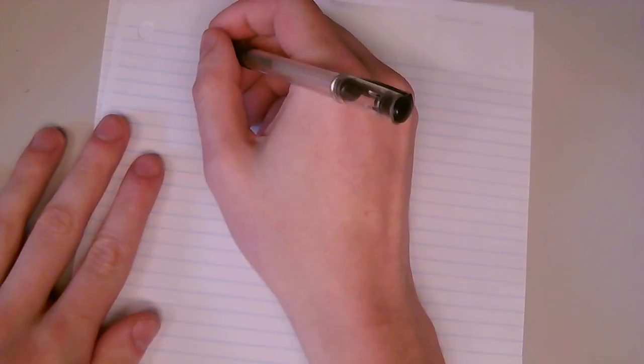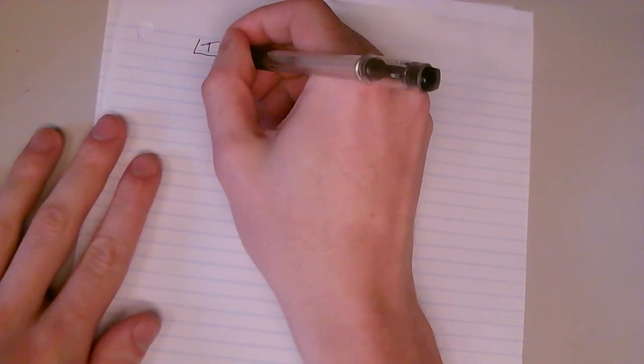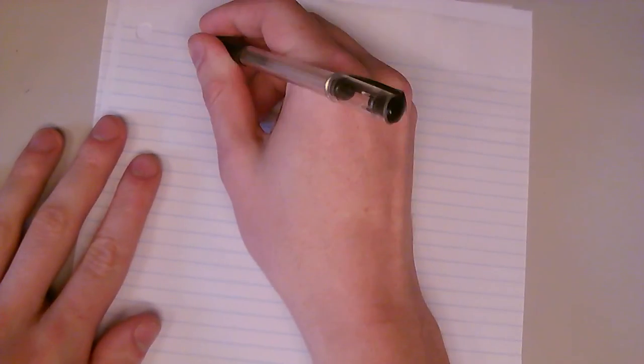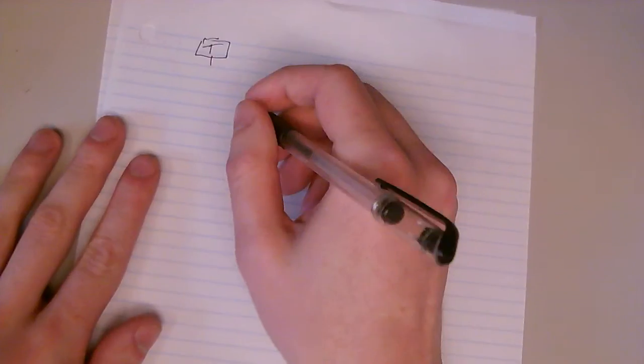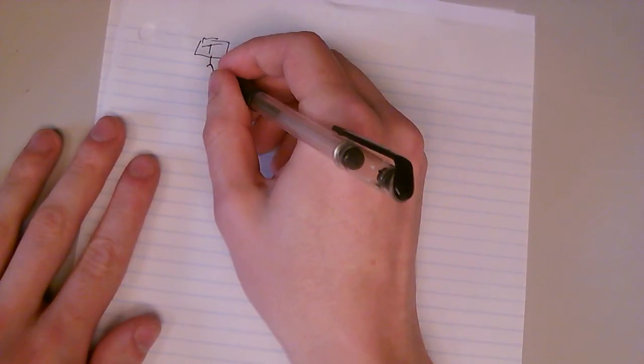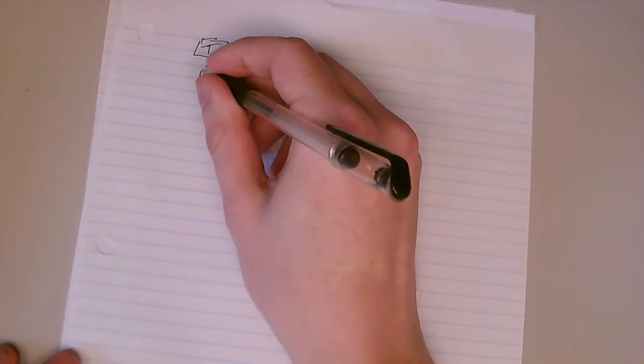So we're going to go ahead and start off like this. Let's say you have a Boolean Decision Diagram that looks like this. Top event, OR gate...